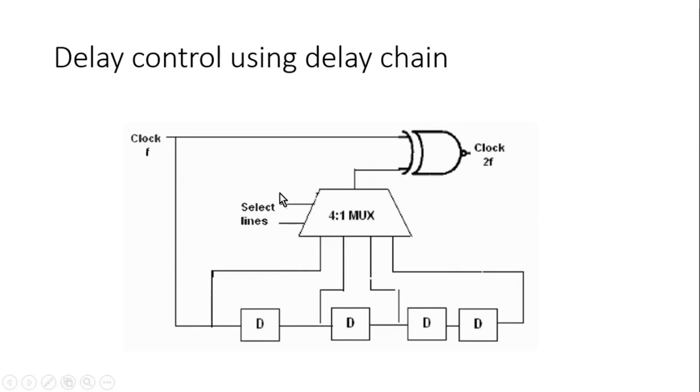From this discussion we can deduce that with the help of these select lines we can control the delay of this delay chain, and which in turn will control the duty cycle of our frequency multiplier.